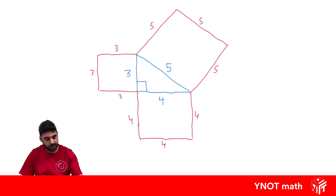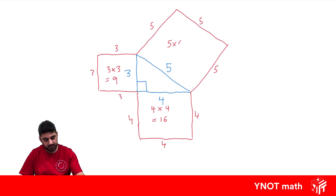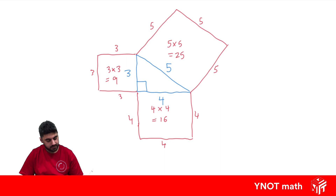Let's find the area of each of these squares. The area of this square is 3 times 3, which is 9. The area of this one is 4 times 4, which is 16. And the area of this one is 5 times 5, which is 25. Do you notice anything about these areas? If you look closely, 25 actually equals 9 plus 16. So we could write that 9 plus 16 is 25.